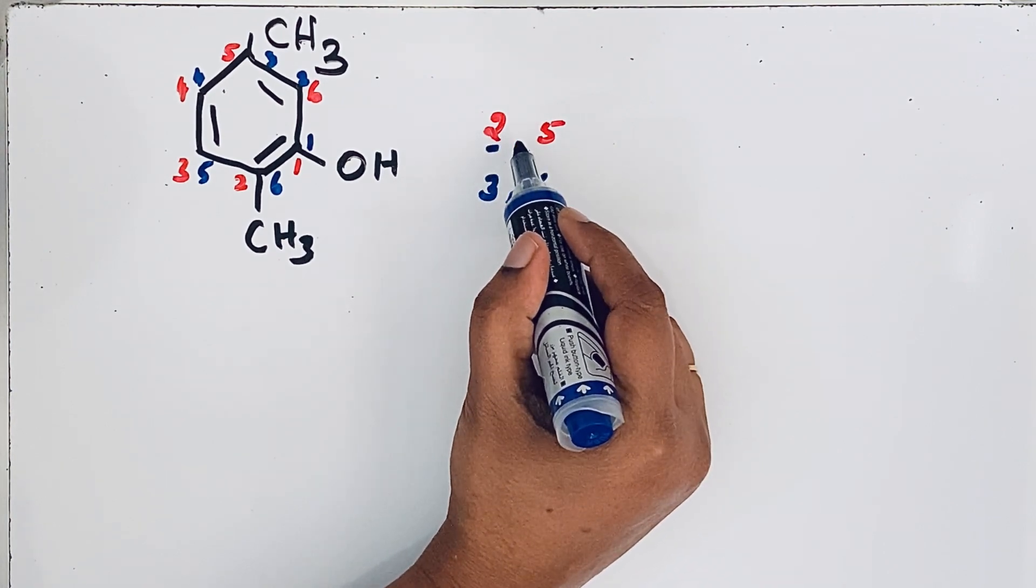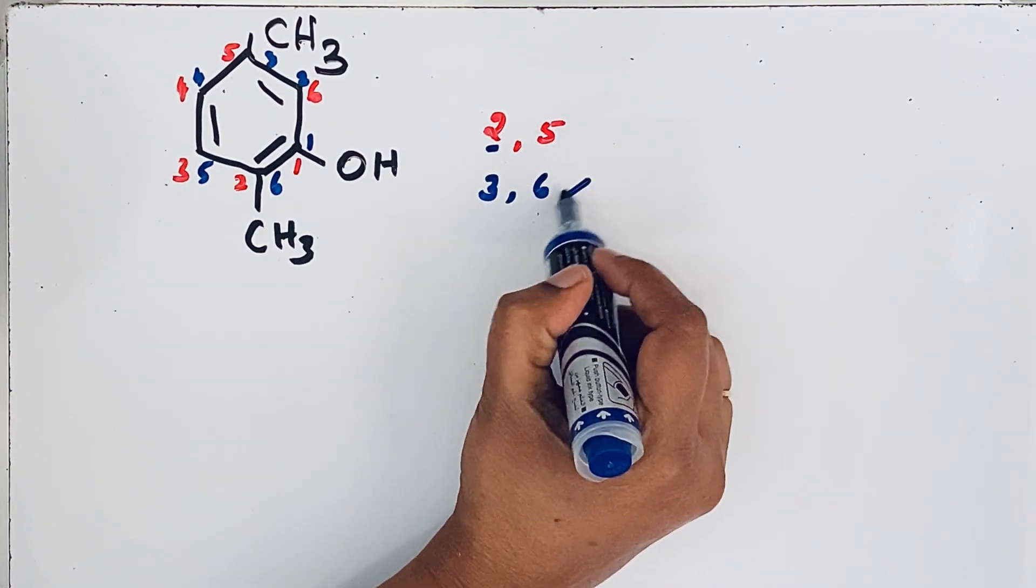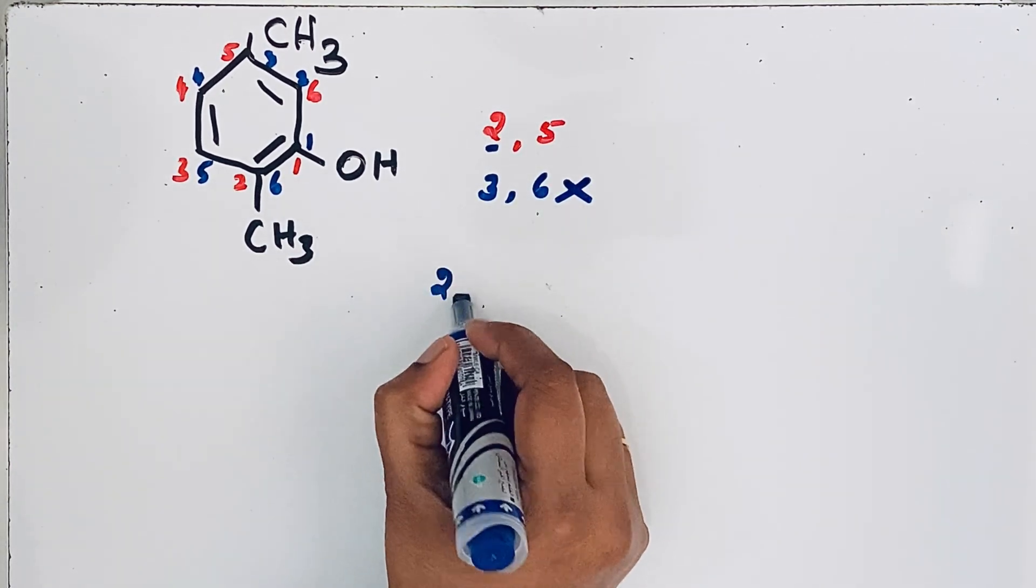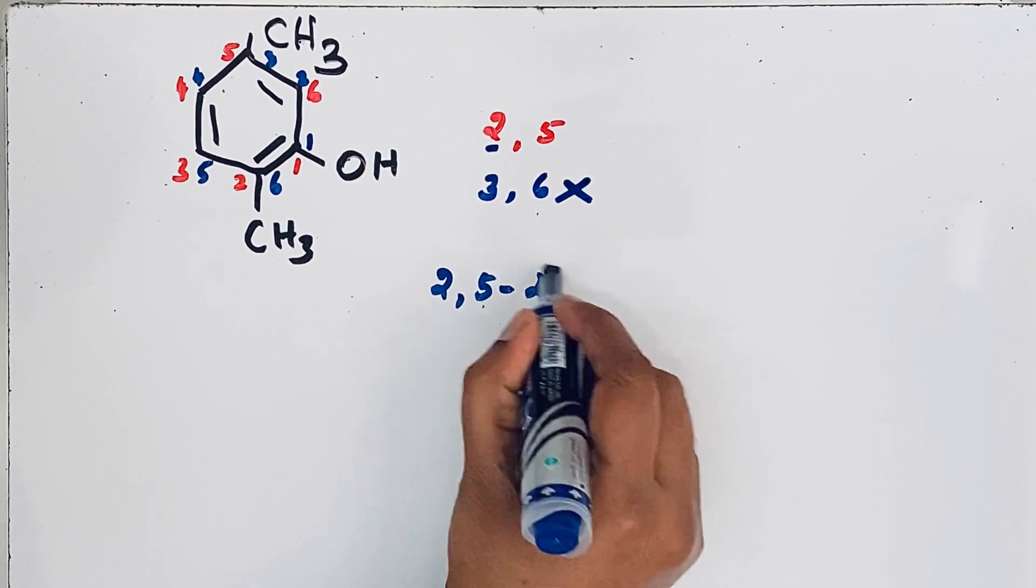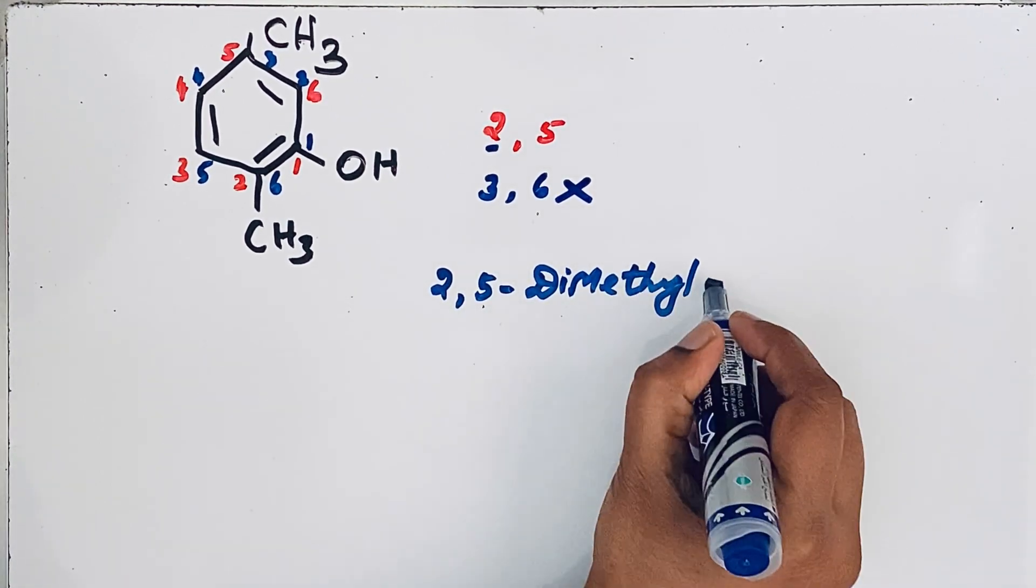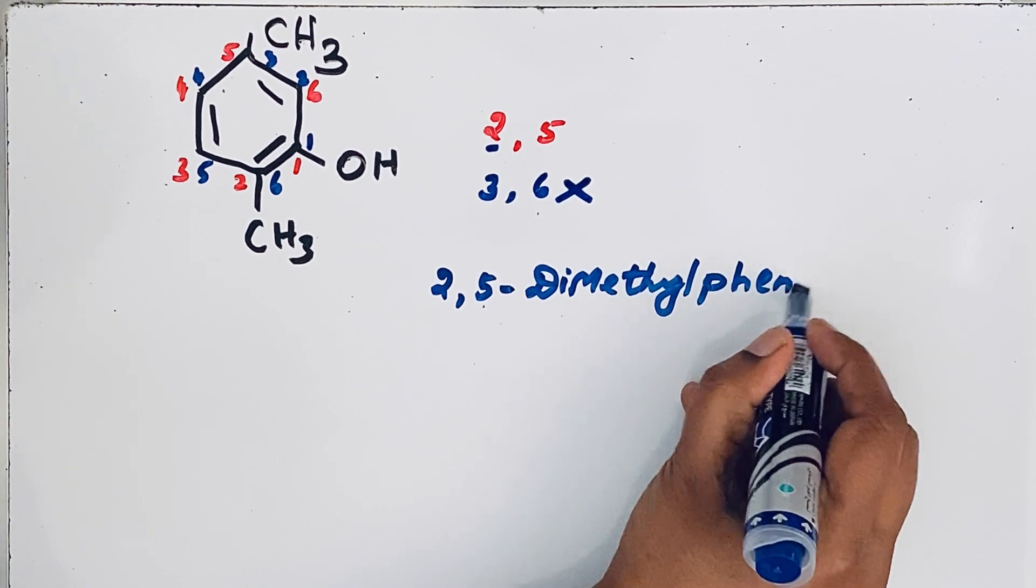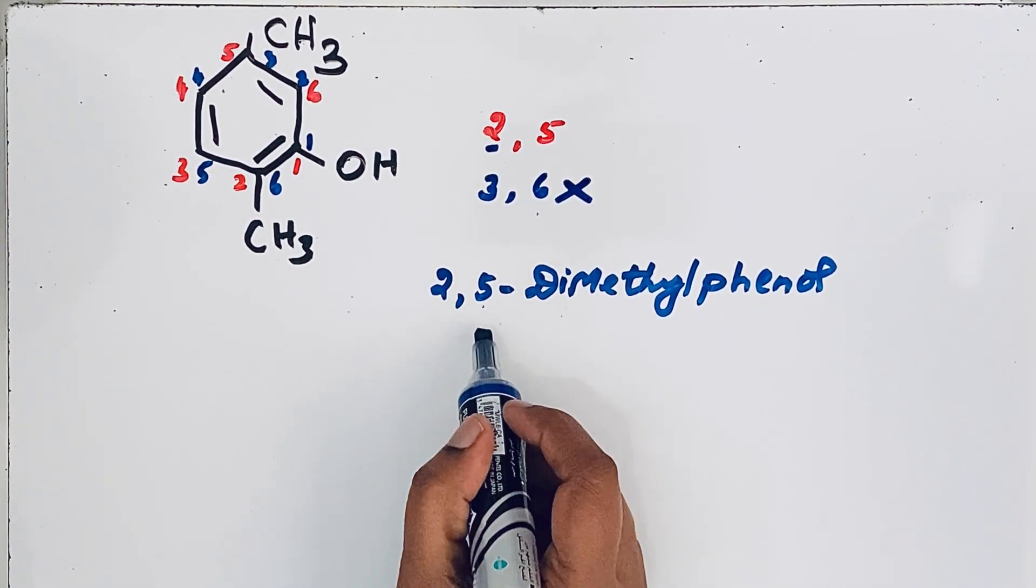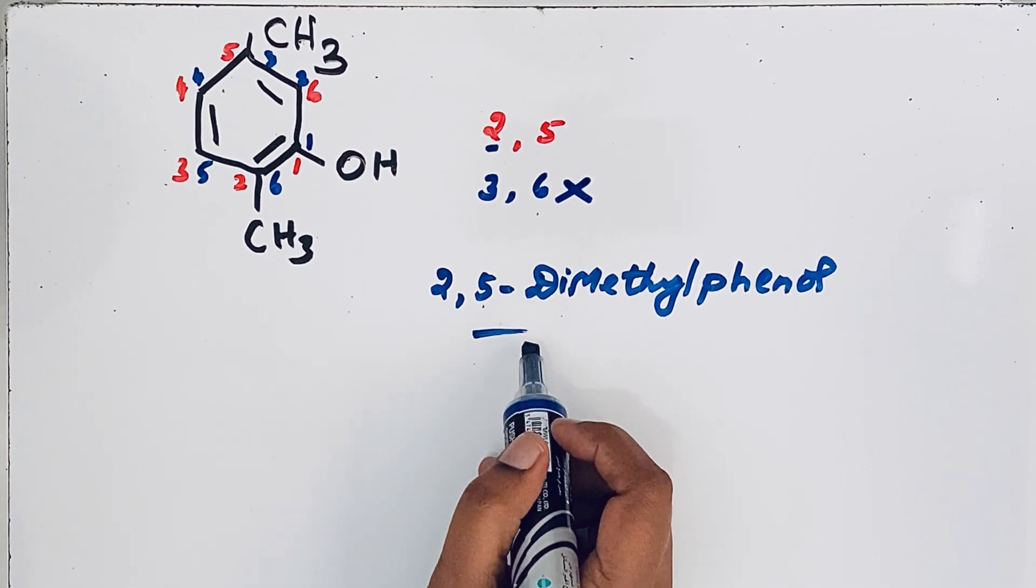That is why 2, 5 are the accepted numbers. This is not the accepted one. We would write 2, 5-dimethylphenol. 2, 5-dimethylphenol is the IUPAC name for this compound.